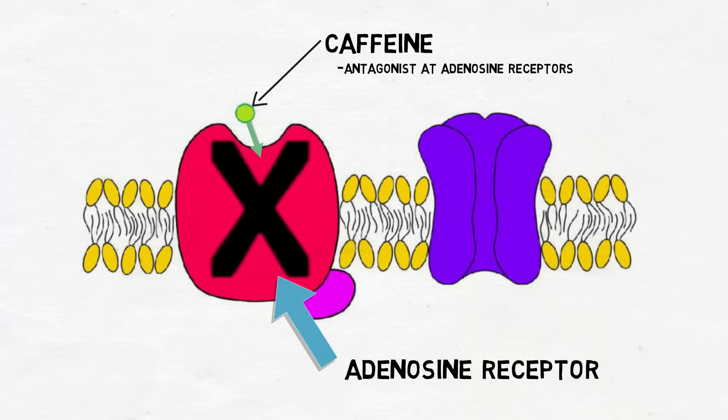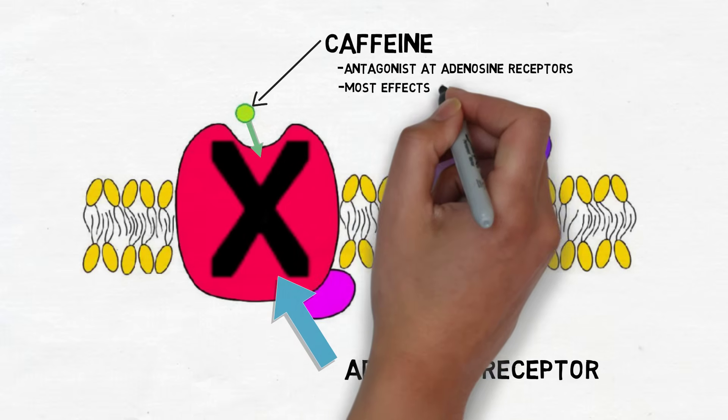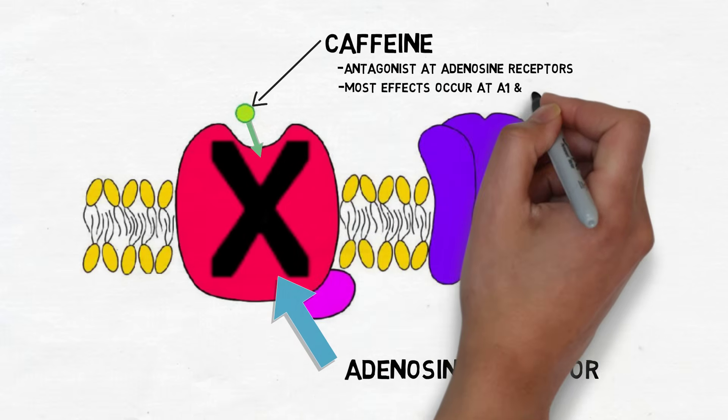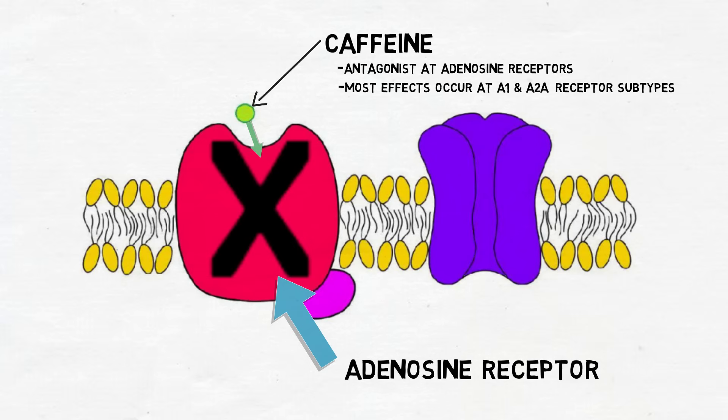Although there are four subtypes of the adenosine receptor, most of caffeine's effects are thought to be due to its antagonistic actions at the A1 and A2a subtypes. Its ability to promote wakefulness may be especially due to actions at the A2a receptor subtype.